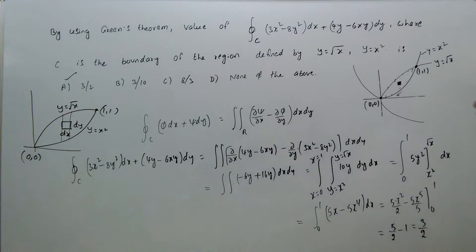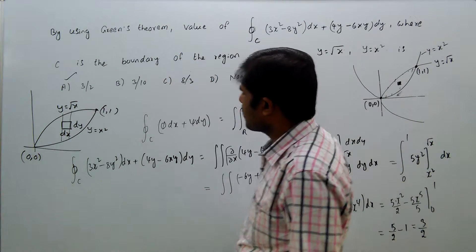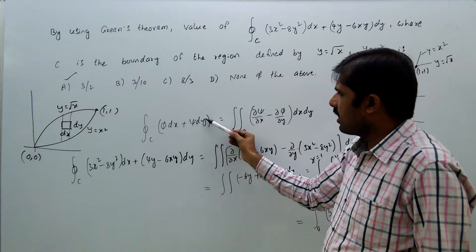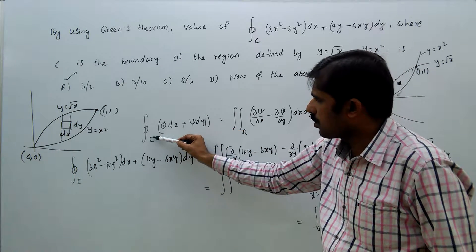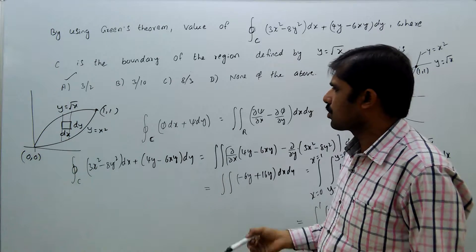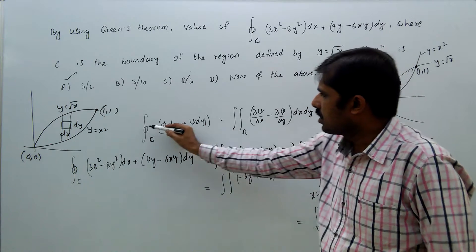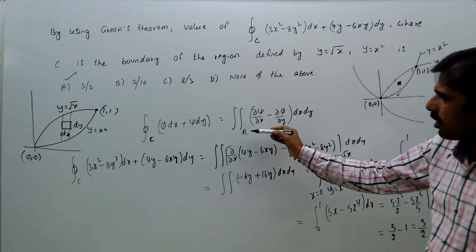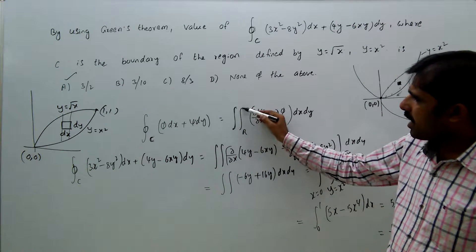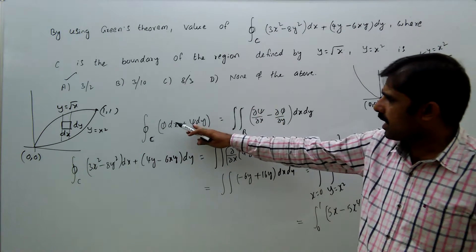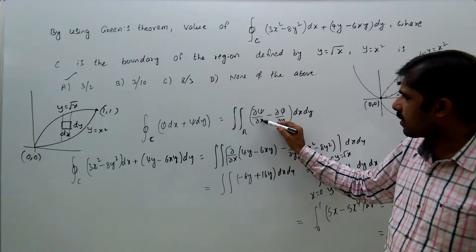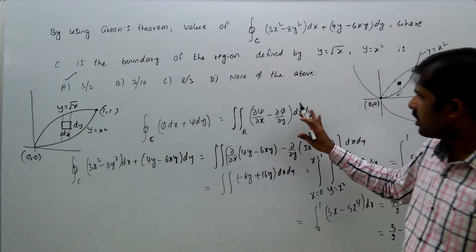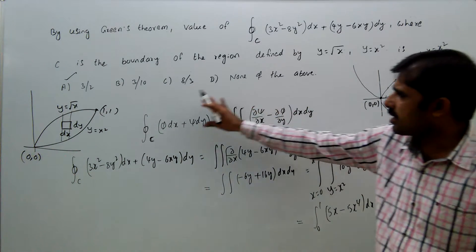Green's theorem states that the closed integral of P dx + Q dy over a closed curve C is equal to the double integral over the area of (∂Q/∂x minus ∂P/∂y) dx dy. This is Green's theorem.